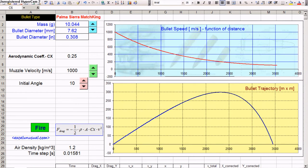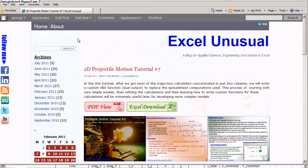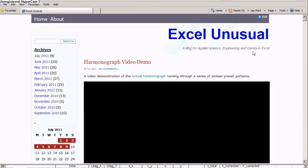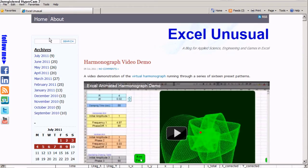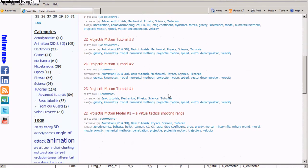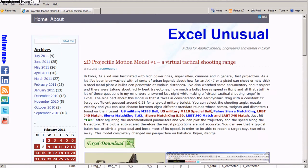You can download this model from excelunusual.com. Once you get here, you will land on the home page. In the search box, you type projectile. It returns a bunch of results. You choose 2D projectile motion, model number one, virtual tactical shooting range.